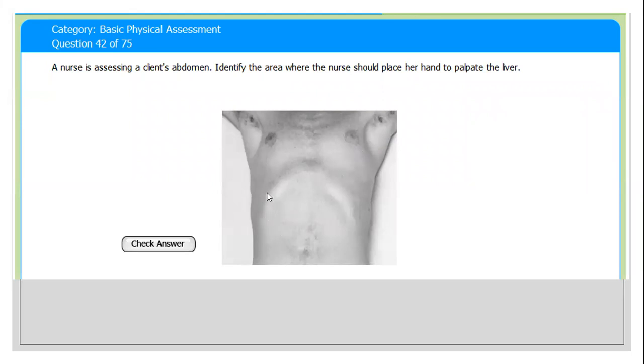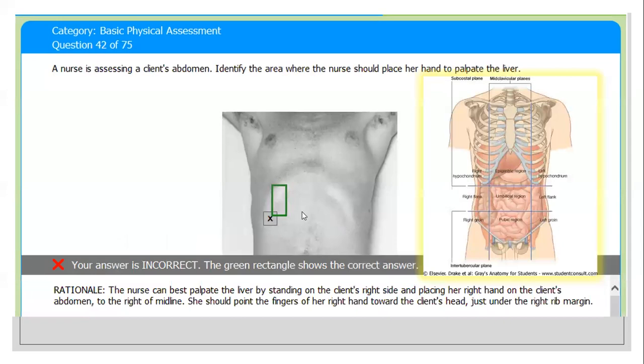Identify the area where the nurse should place her hand to palpate the liver. You have to click the area where the liver is there. Right upper quadrant, lower quadrant, right side or left side. You have to click in this green area. The green rectangle shows the correct answer.